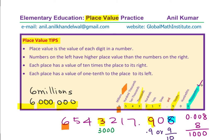Numbers on the left have higher place value than numbers on the right. Each place has a value of 10 times the place on its right. So if you move one number to the left, it is times 10 in place value. On the other hand, if you move to the right, it is divided by 10. Each place has a value of 1/10th of the place to its left. So if you compare positions 2 and 1, position 1 has 1/10th the value of position 2.